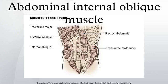Secondly, its contraction rotates and side-bends the trunk by pulling the ribcage and midline towards the hip and lower back of the same side. It acts with the external oblique muscle of the opposite side to achieve this torsional movement of the trunk. For example, the right internal oblique and the left external oblique contract as the torso flexes and rotates to bring the left shoulder towards the right hip. For this reason, the internal obliques are referred to as same-side rotators.